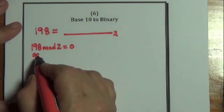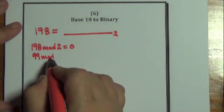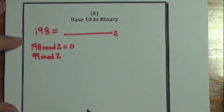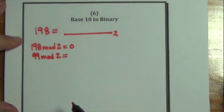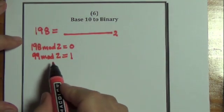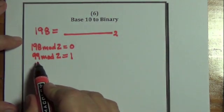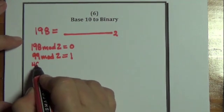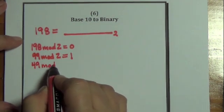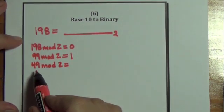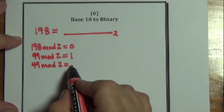So the next line, I write that quotient 99. And I take 99 mod 2. I get the remainder of 1 because 2 goes into 99 49 times with a remainder of 1. So I write that quotient on the next line, 49 mod 2. Now 2 goes into 49 24 times with a remainder of 1.